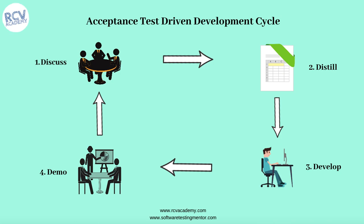Once all positive, negative, and non-functional acceptance test cases are defined, the third phase is Develop. With the user story fully discussed and test cases documented, the developer starts writing the code — similar to test driven development — referring to the acceptance test cases written in the Distill step to meet the acceptance criteria documented there.